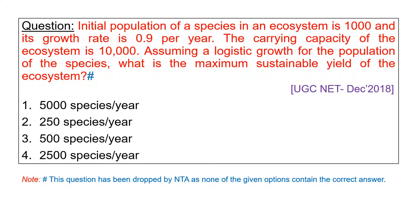We have 4 options: 5000 species per year, 250 species per year, 500 species per year, 2500 species per year.